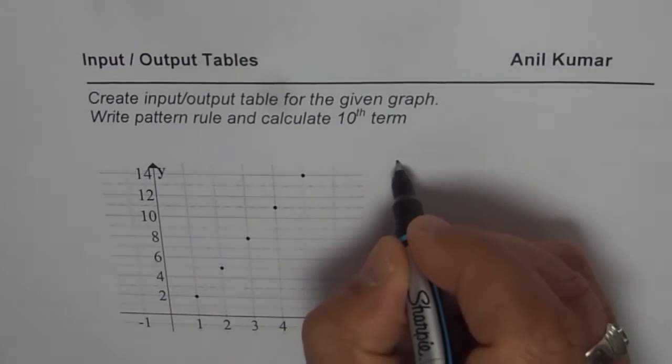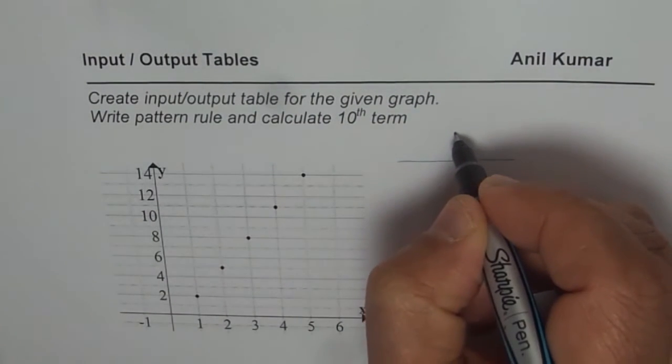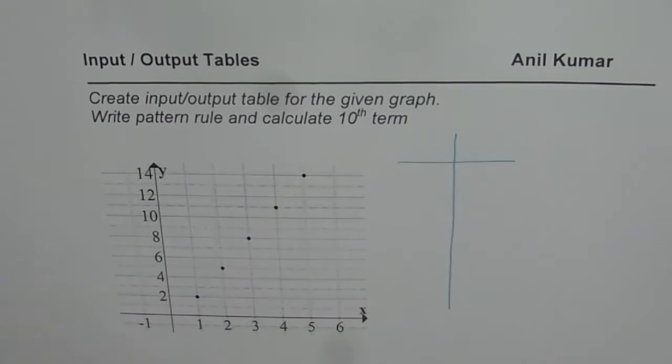Now to create this input-output table, let's make two columns, one for input and one for output. And we'll write down the values for input and output.